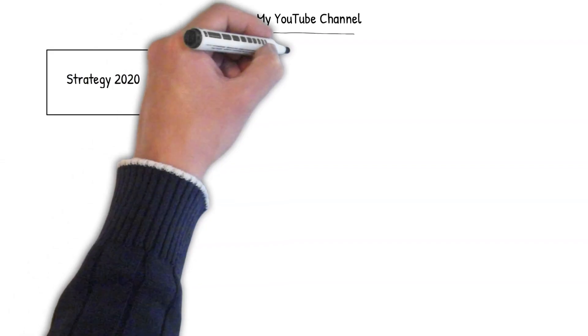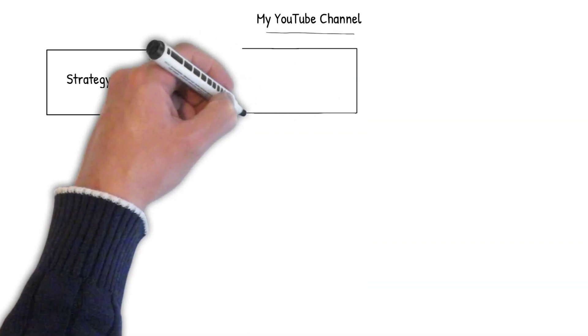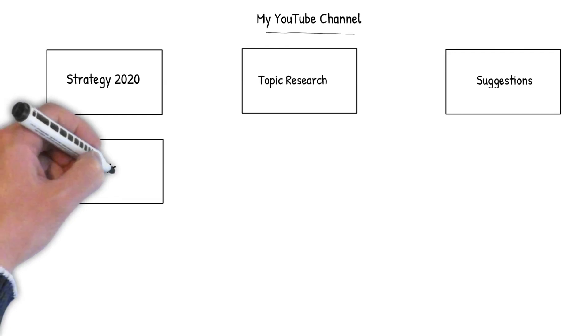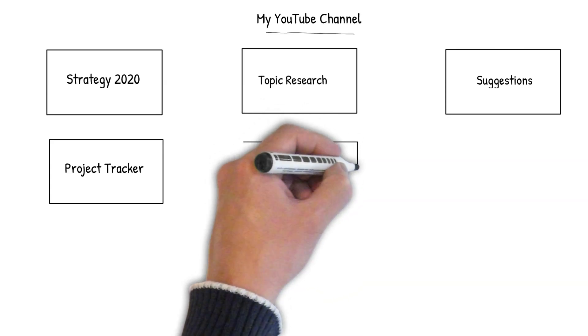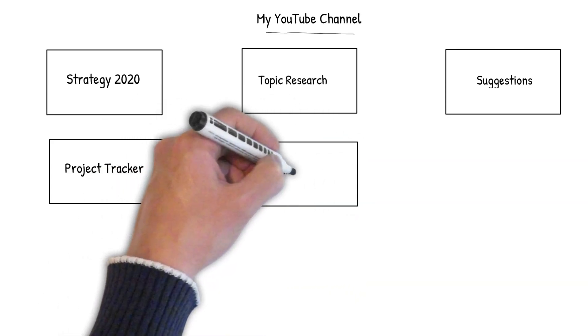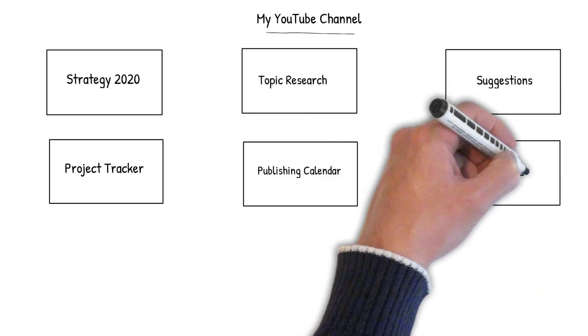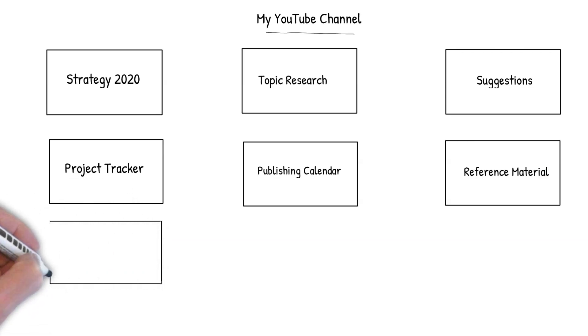The components I want are: my 2020 YouTube strategy that I could refer to from time to time; the topics I research and select for making videos; suggestions for channel improvements from friends, family, and viewers; my main project tracker to track progress of individual videos from start to finish; my publishing calendar; and additional reference material, templates, and actions to do.